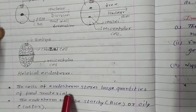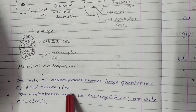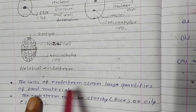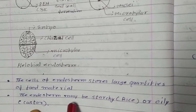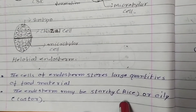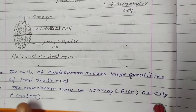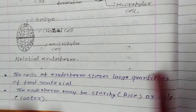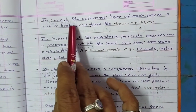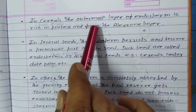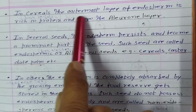The cells of endosperm store large quantities of food material. The endosperm may be starchy, as seen in rice, or oily, as seen in castor. Some cereals — grain-producing plants like wheat — also store food in the endosperm.